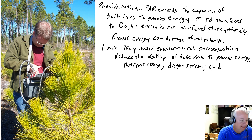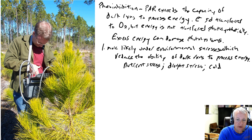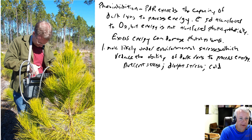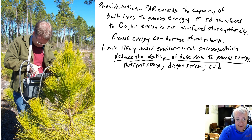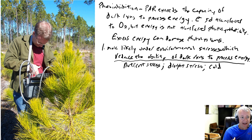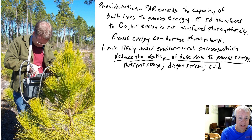This picture is an example of photoinhibition in young pines after a cold snap in Florida. In Florida we have mild winters, but we do periodically get cold weather. When we get cold weather, that reduces the ability of the dark reactions to process energy, but it remains sunny. So those leaves are taking in photosynthetically active radiation but can't process it through the dark reactions, which can end up bleaching chlorophyll — that's not a happy looking tree, it's really yellow.